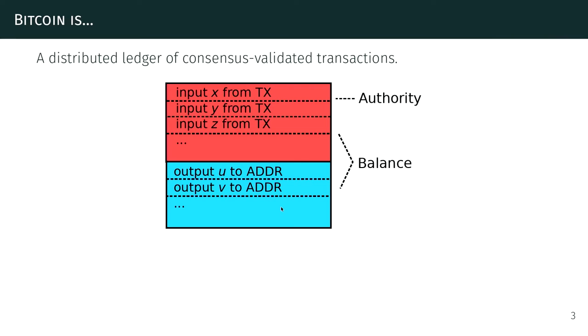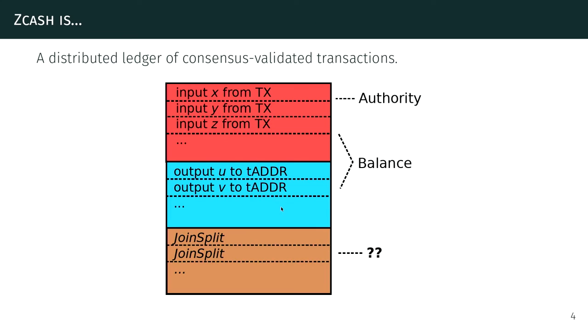Please imagine Bitcoin just as a long list of transactions that is publicly verified. Each such transaction takes a number of input amounts from previous transactions and then declares a number of output amounts to some receiver addresses. In order for this transaction to be valid, you need to show that you actually have authority to spend the inputs, and you need to make sure the input amounts balance with the output amounts. With Zcash, the picture looks almost exactly the same, except there's a new block at the end of the transaction that adds some things called join splits.